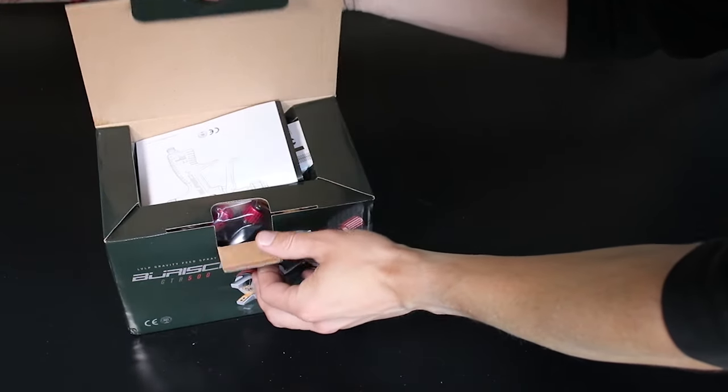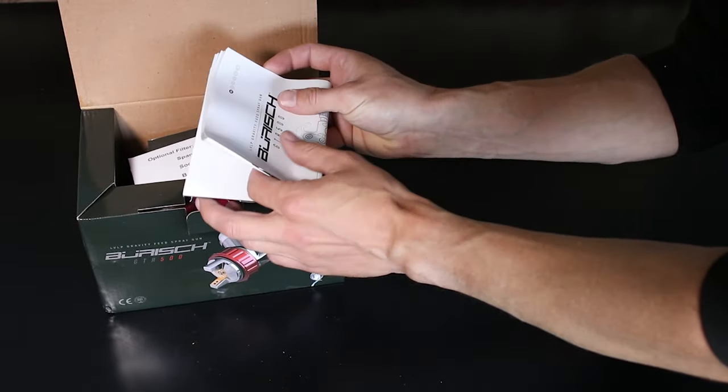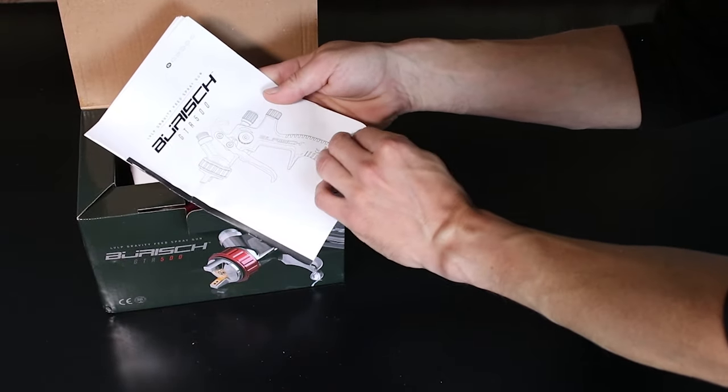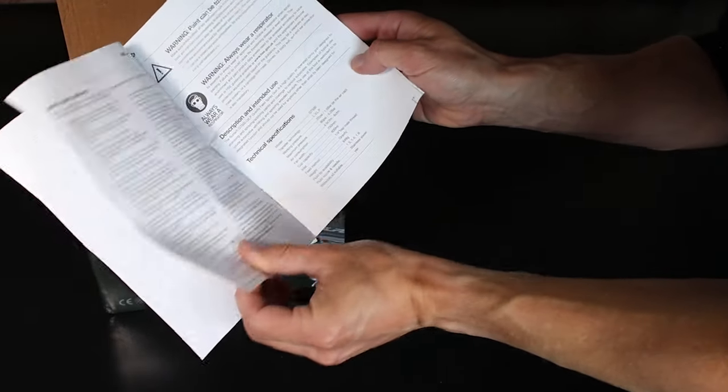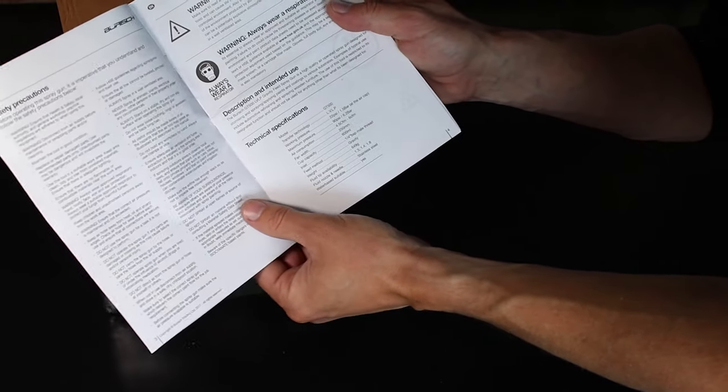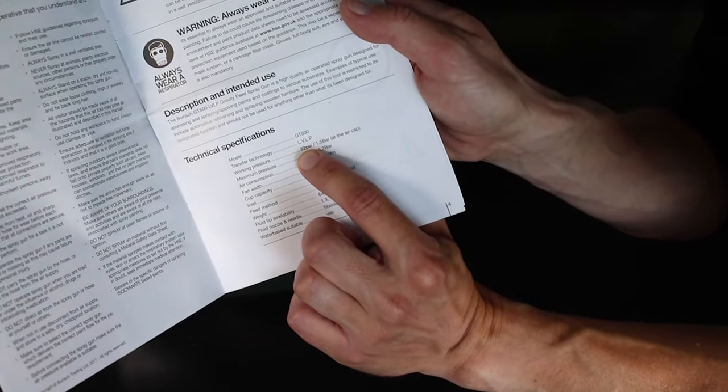In order to set up the spray gun correctly, we need to make some adjustments so that when you depress the trigger, the working pressure measures what the spray gun manufacturer recommends. In this instance for the GTR 500, we need a working pressure of 2 bar or 29 psi. We'll now show you how this is done.